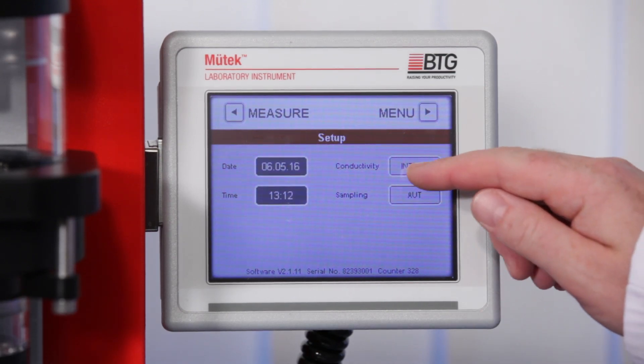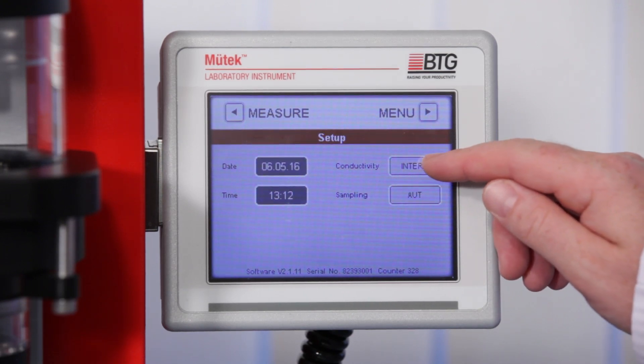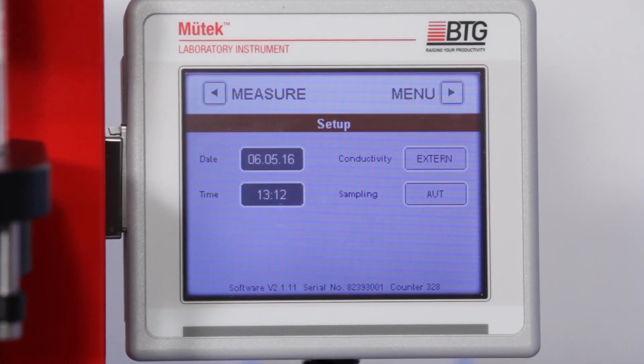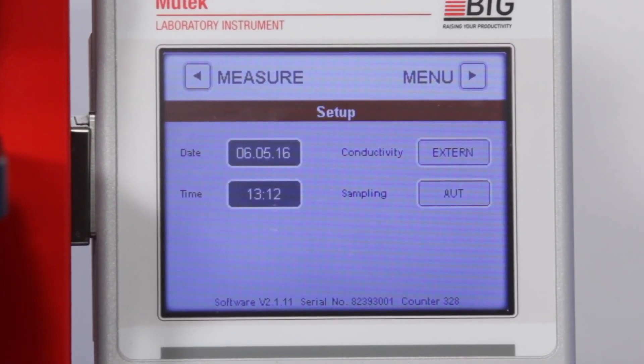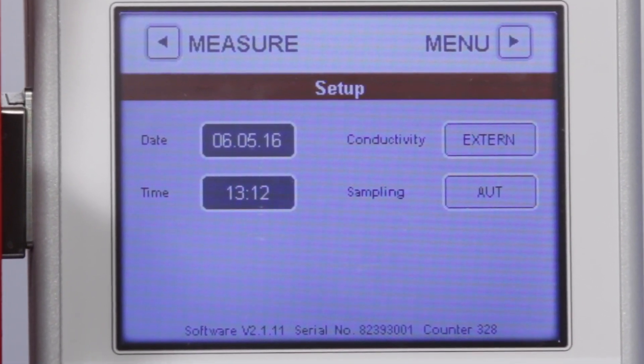As another option, you can either decide for internal conductivity measurement of the SZP, or alternatively, for calculation of the zeta potential with an external conductivity value. This external value may be entered prior to measurement.